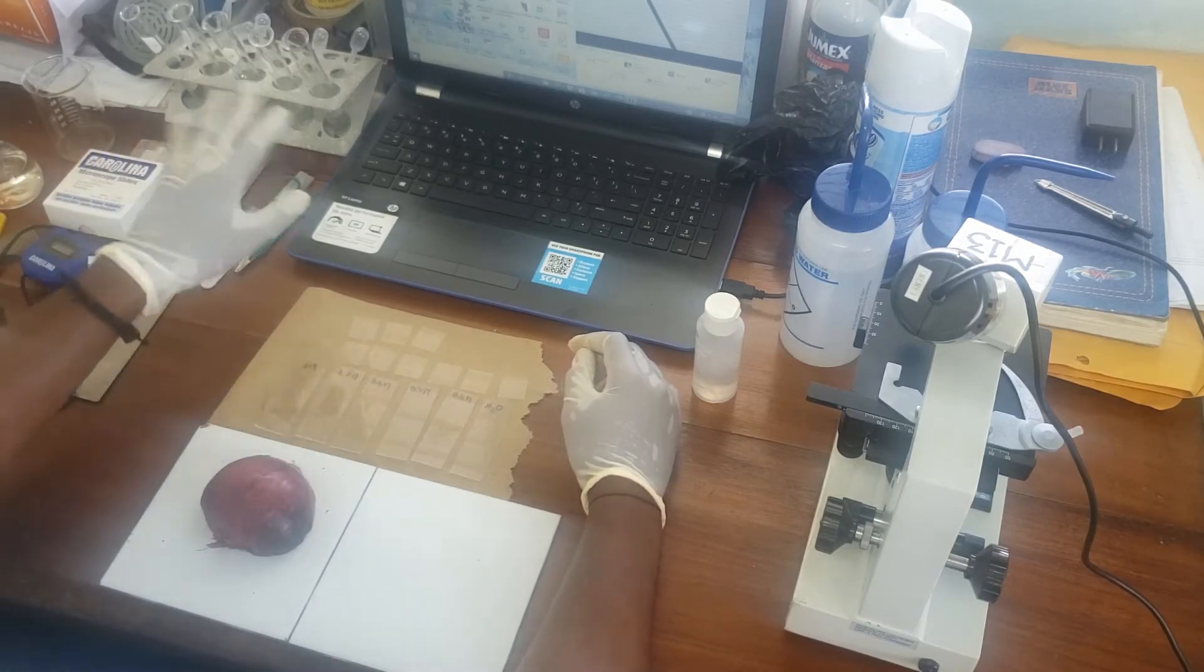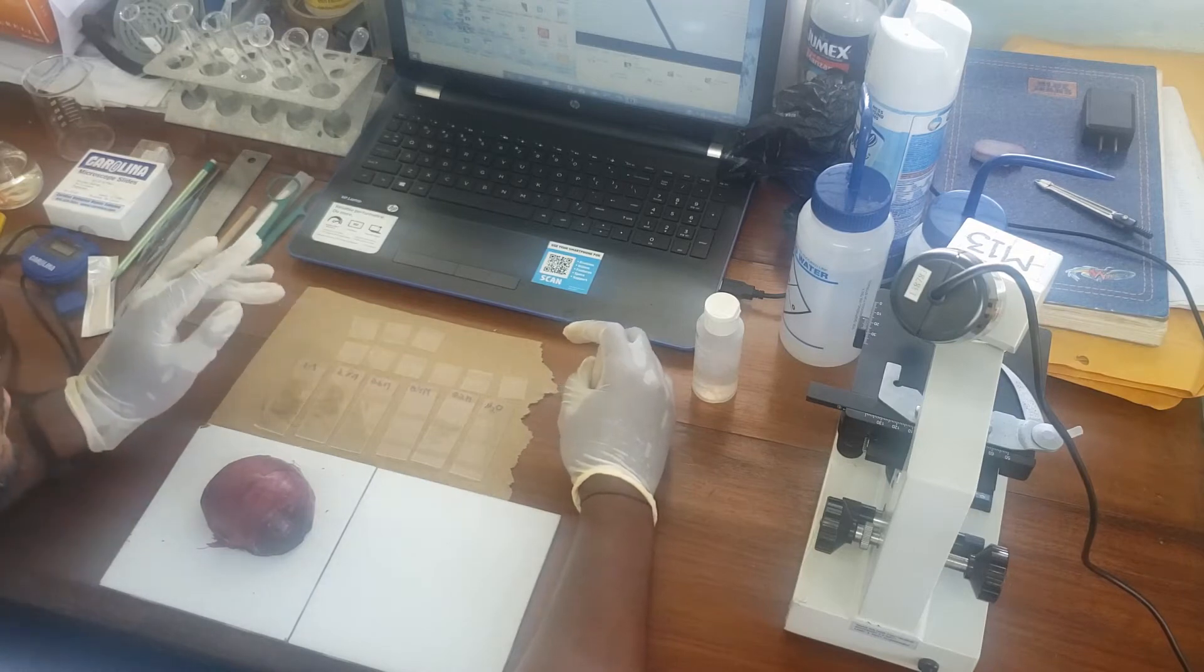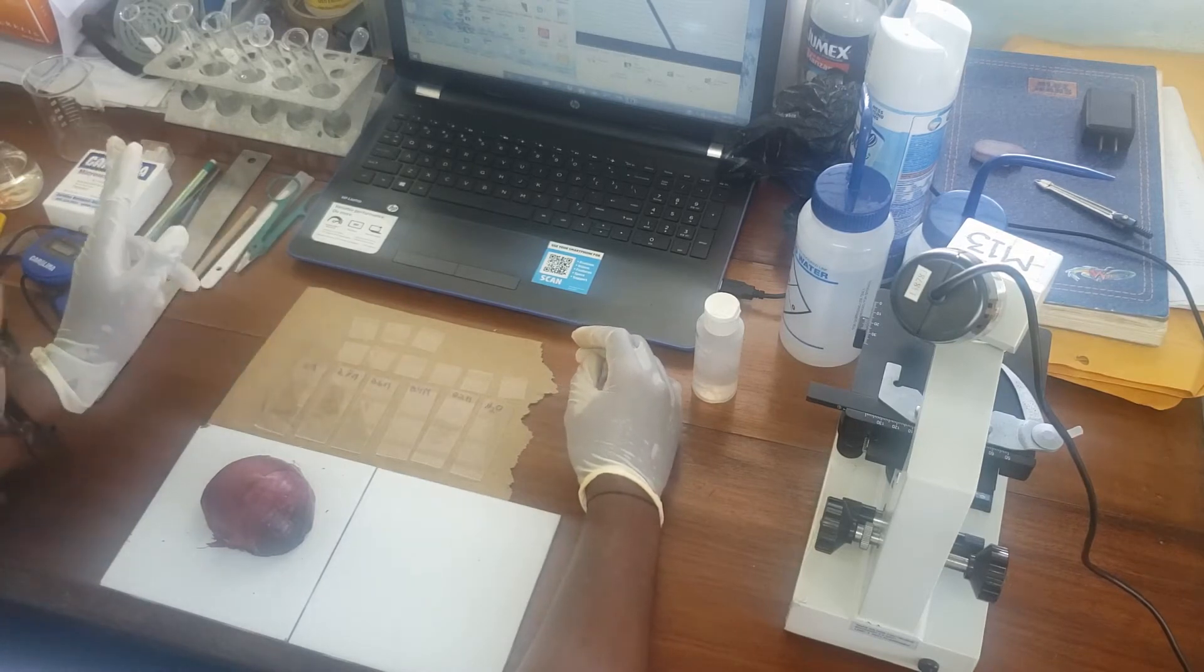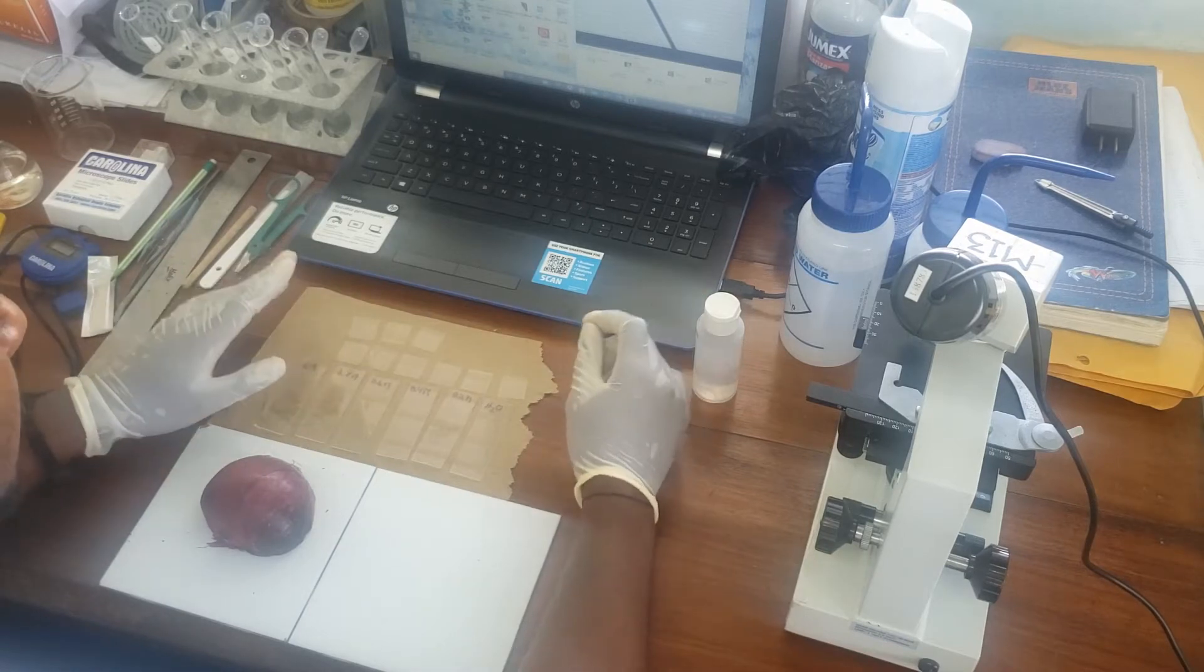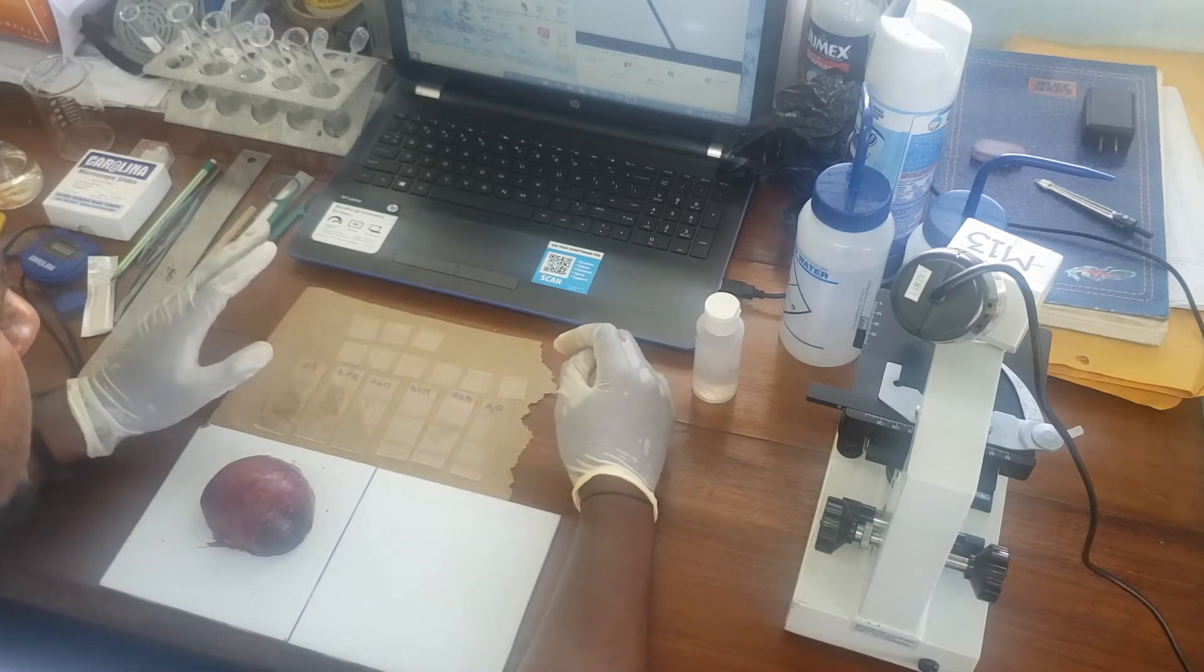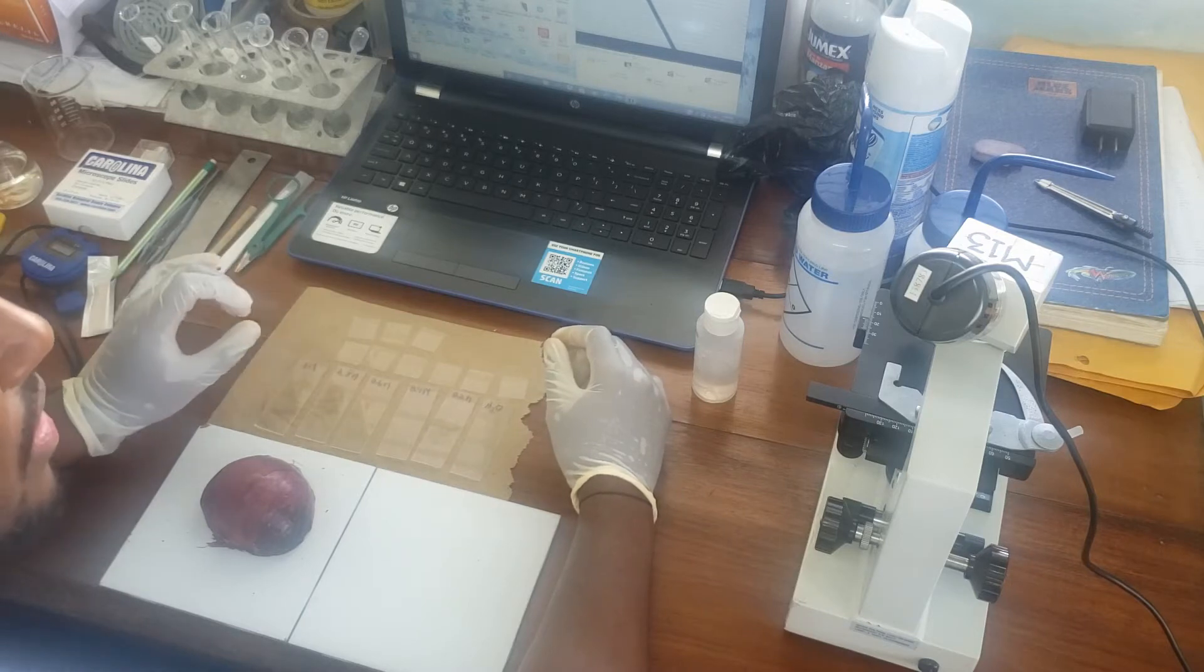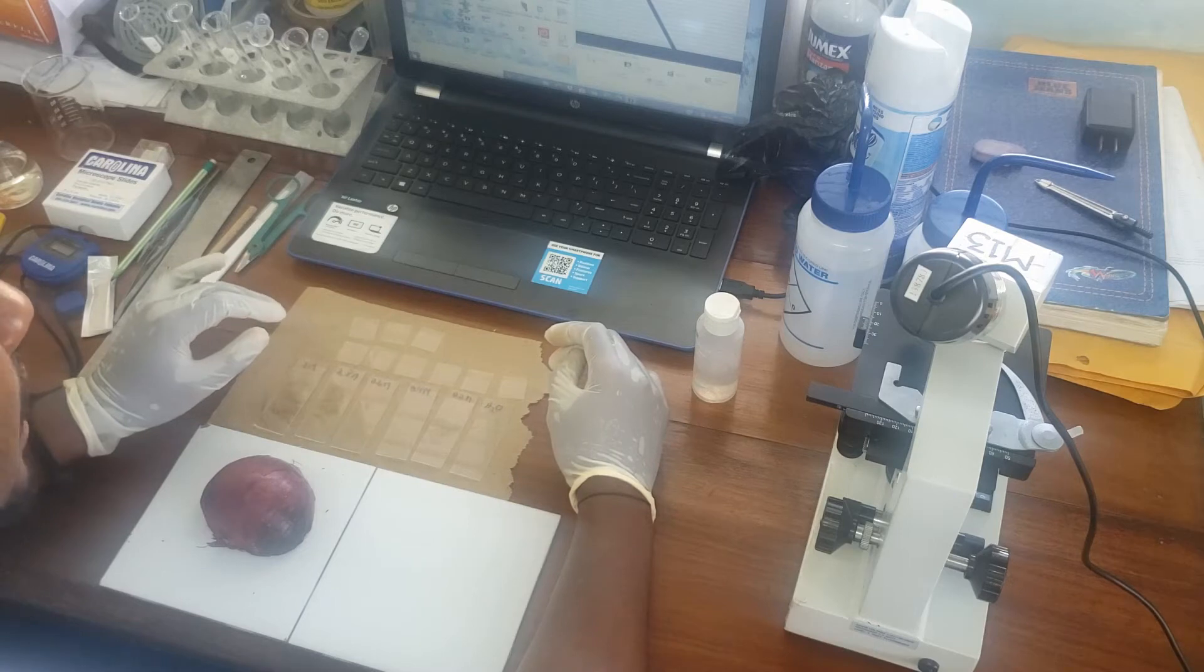So I have various concentrations of sucrose solution starting from 1 molar to 0.2 molar solution and we also have distilled water. What we'll be doing is placing pieces of the onion epidermal tissue inside the solution and see how the cells react to that.